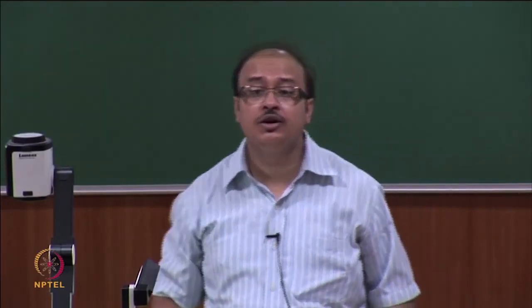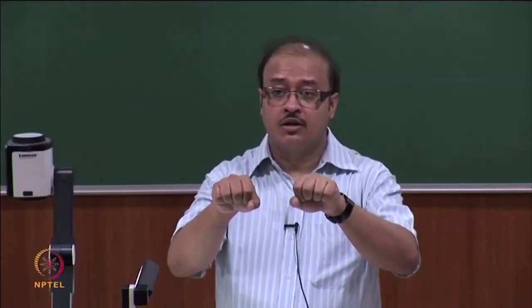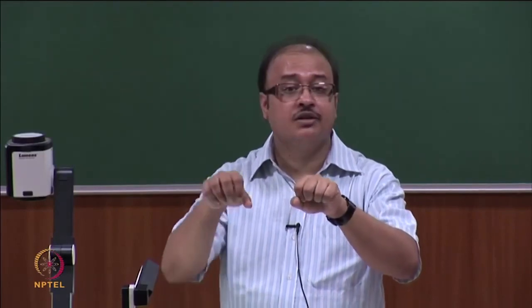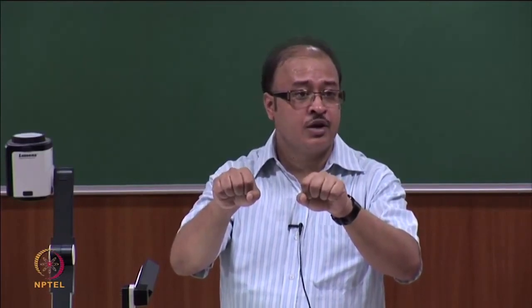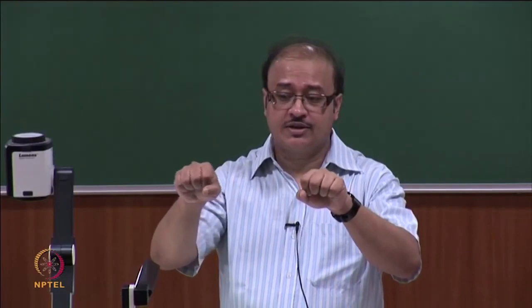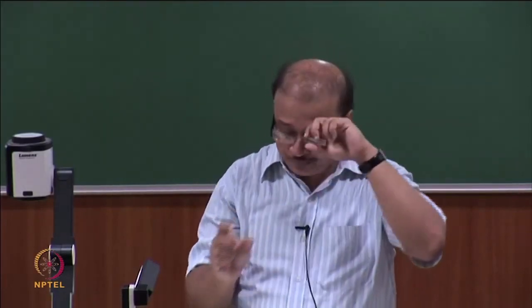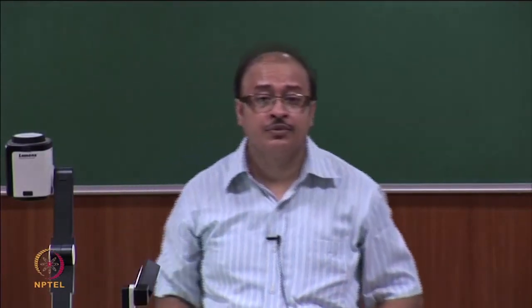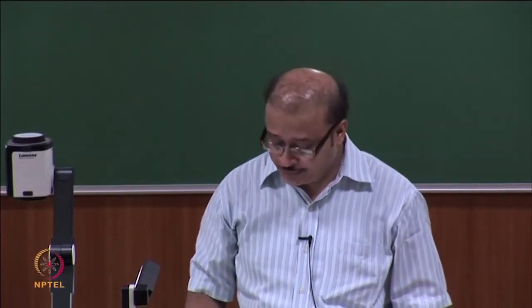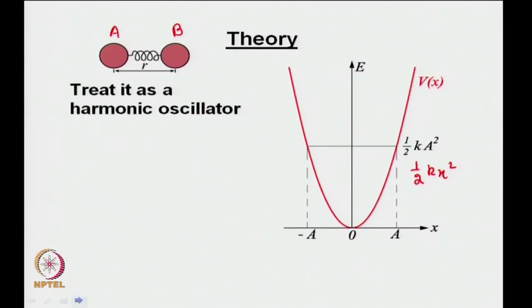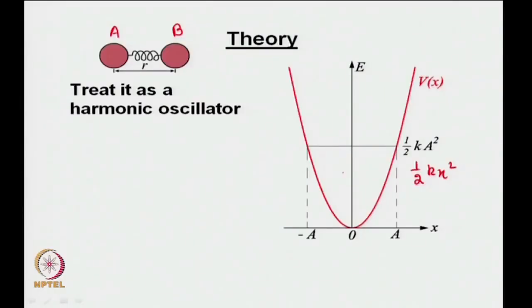The equilibrium nuclear geometry is the bond distance r₀. If I stretch the bond, the distance increases and that displacement from the equilibrium position is denoted as x. This corresponds to ½kx² — the red curve. We treat this spring oscillation as a harmonic oscillator, meaning the spring is oscillating and vibrating symmetrically on both sides of zero.